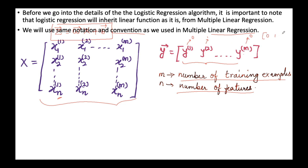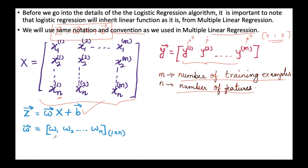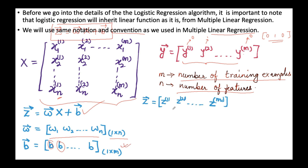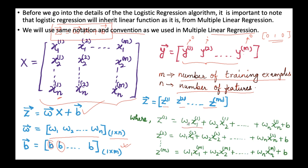So the label sequence will be like 0, 1, 0 — this is the key difference between the labels of linear regression and logistic regression. The weight vector w = [w₁, w₂, …, wₙ] is a row vector of dimension 1×n. The bias vector b is a 1×m replication of b. The z vector is [z₁, z₂, …, zₘ], where z₁ = w₁x₁ + w₂x₂ + … + wₙxₙ + b for the first training example, and similarly for all others. In the next video we will go into more details about logistic regression.